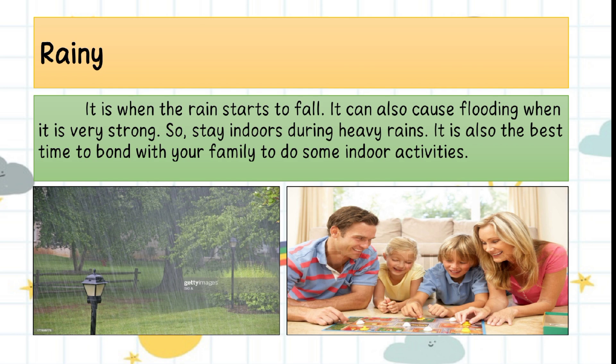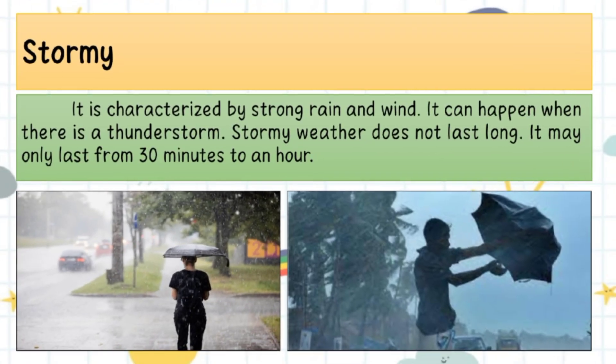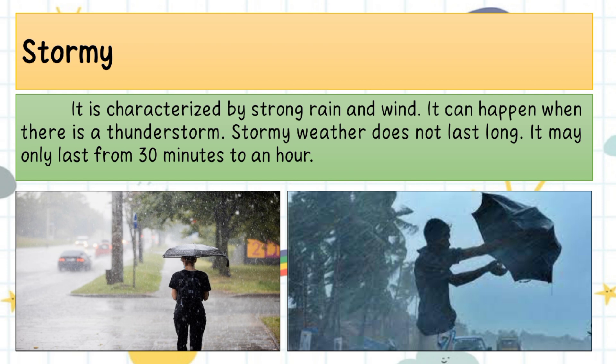Rainy weather is also the best time to bond with your family and do some indoor activities. Stormy — it is characterized by strong rain and wind, and it can happen when there is a thunderstorm. Stormy weather does not last long; it may only last from 30 minutes to an hour.